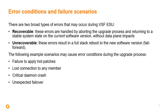The two major types of errors that may occur during VSF ESU are recoverable and unrecoverable errors. Recoverable errors, which occur before hot patching or database migration, are handled by aborting the upgrade process and returning to normal system operation with no data plane impacts. Unrecoverable errors, which occur during or after hot patching and database migration, are handled by rebooting the entire stack to the new software version. Scenarios involving errors include failure to apply hot patches, any loss of connectivity between stack members other than the conductor during VSF switchover, any critical daemon crash, or any unexpected VSF failover events.